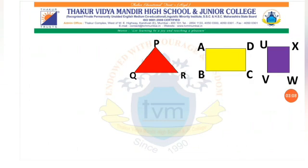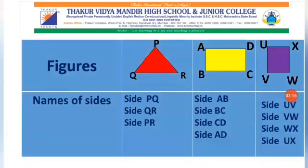Children, today we are studying the new concept of writing names of sides of given figures. Let's see this table — we have three different figures and the answers are also given. Check out the answer column for names of sides. For triangle PQR, its sides are side PQ, side QR, and side PR. The same way, for rectangle ABCD: side AB, side BC, side CD, and side AD.